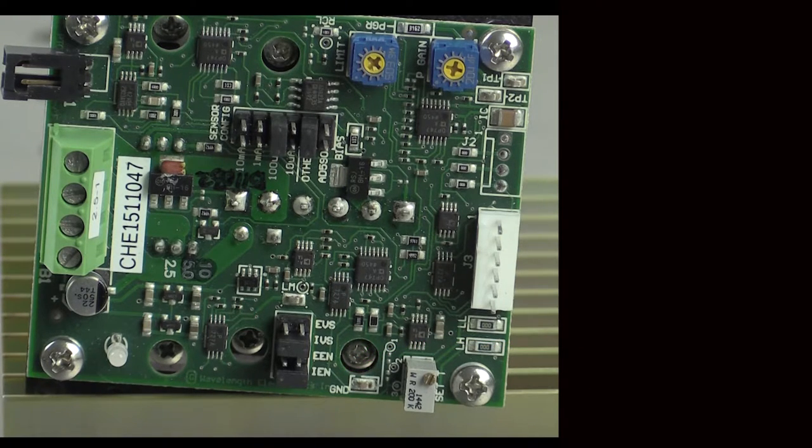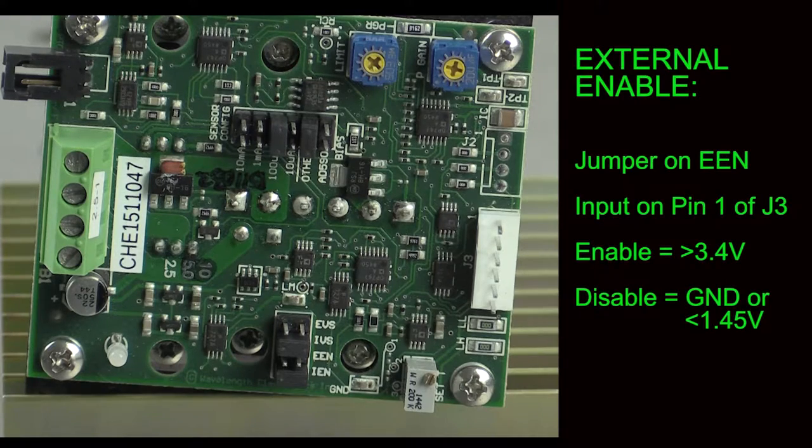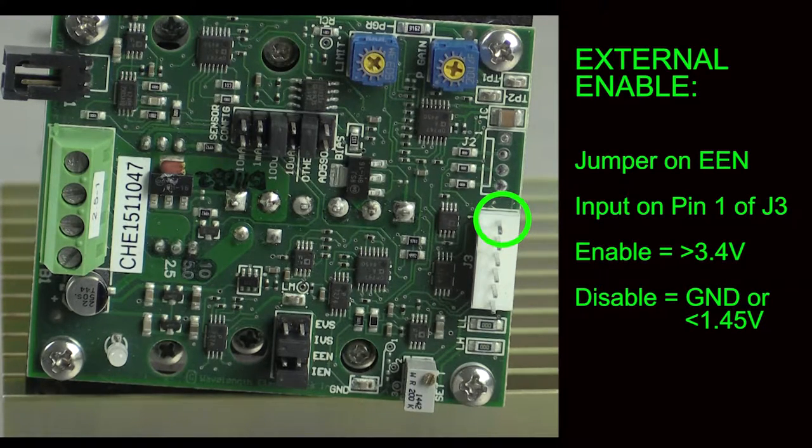To use an external setpoint voltage, the jumper would go to EVS and a voltage is expected at pin 6 of J3. When the jumper is in the EVS position, the onboard setpoint trim pot setting is ignored. If you do not want the output current always enabled, set the jumper to EEN and provide a control signal to pin 1 of J3.